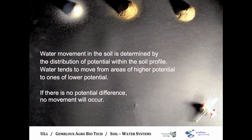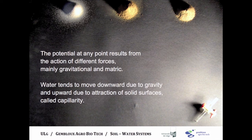Water movement in soil is determined by the distribution of potential within the soil profile. Water tends to move from areas of higher potential to ones of lower potential. If there is no potential difference, no movement will occur.